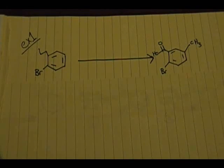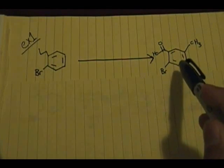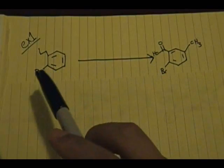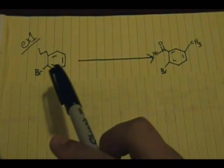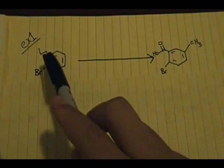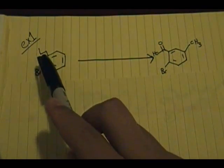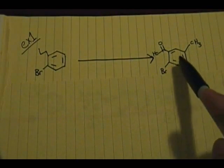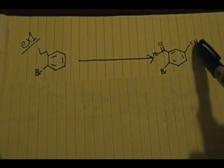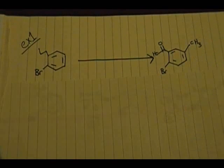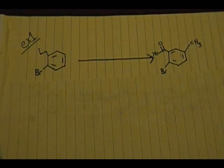The first problem is this one: we want to form a product from a starting material that has a bromine and an alkyl group. We want to form a product with a carboxylic acid in one position and a methyl group in another position.